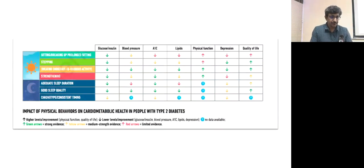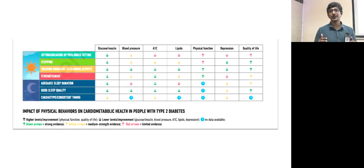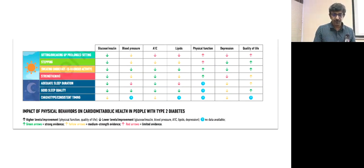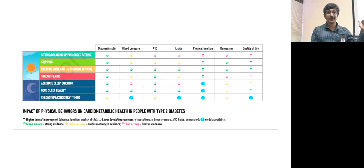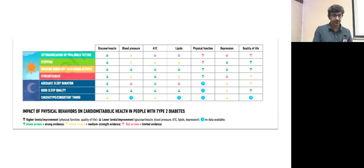If sitting for more than 30 minutes, get up and walk — this alone has been shown to decrease insulin resistance and glucose levels. Stepping decreases glucose, reduces depression, and improves quality of life. Vigorous physical activity decreases glucose, blood pressure, HbA1c, and lipid profile while improving physical function and quality of life. Strengthening exercises lower HbA1c and glucose. Adequate quality sleep decreases glucose, HbA1c, and lipids and improves quality of life.